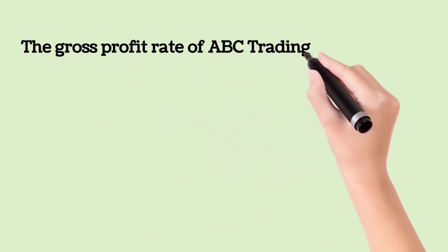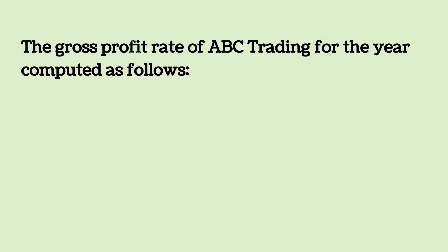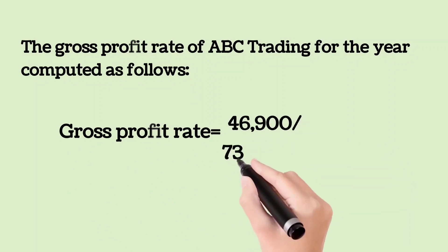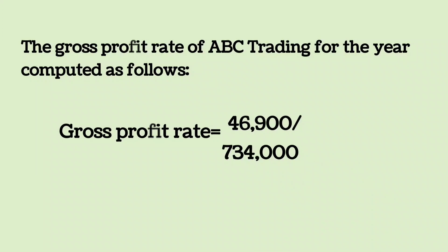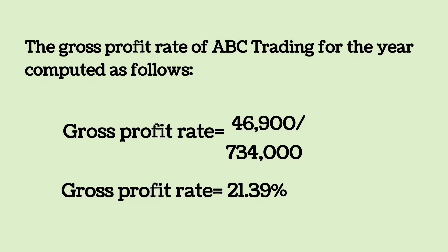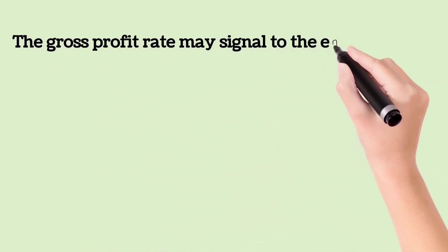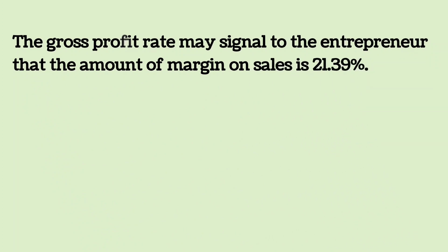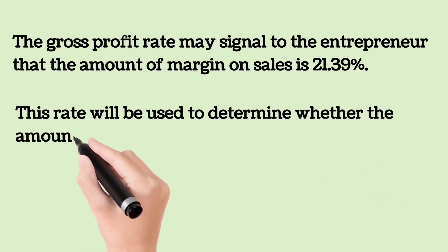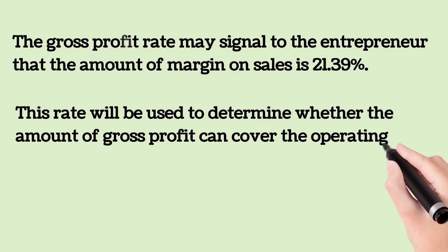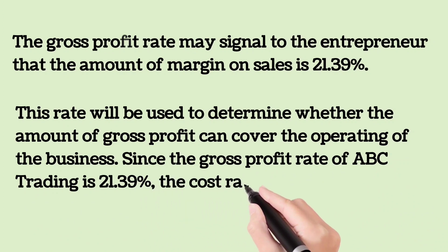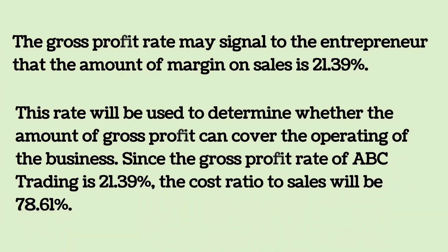The gross profit rate of ABC Trading is computed as follows: gross profit rate is equal to $46,900 divided by $734,000, which equals 21.39%. This rate signals to the entrepreneur that the margin on sales is 21.39%, and will be used to determine whether gross profit can cover operating expenses. Since the gross profit rate is 21.39%, the cost ratio to sales will be 78.61%.